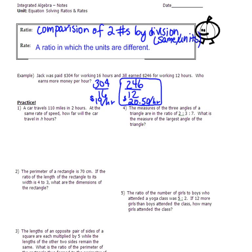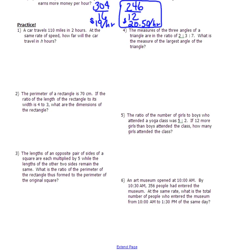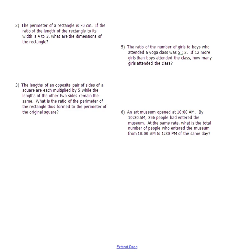I'm going to do a couple of these with you and then I'm going to go on to proportions because I don't think you need me to do all of them. So let's look down at number three since that one's a little bit more challenging. The lengths of an opposite pair of sides of a square are each multiplied by five while the lengths of the other two sides remain the same. What is the ratio of the perimeter of the rectangle thus formed to the perimeter of the original square?